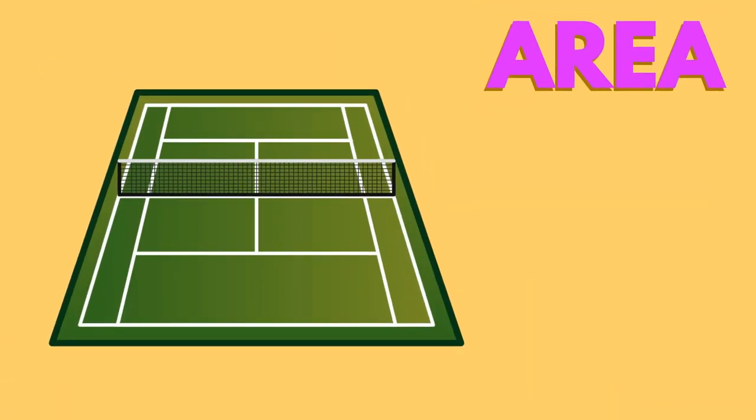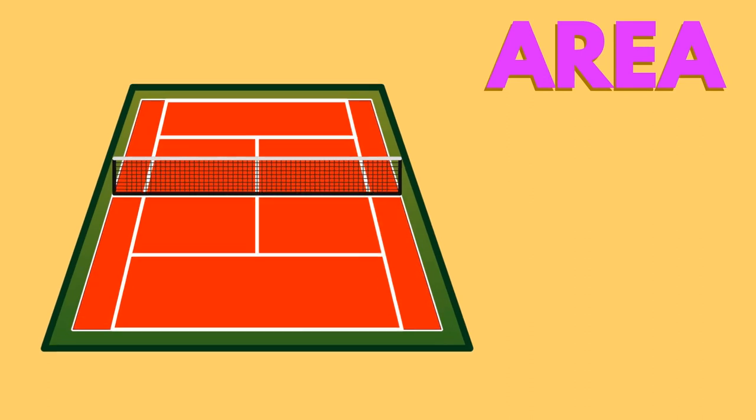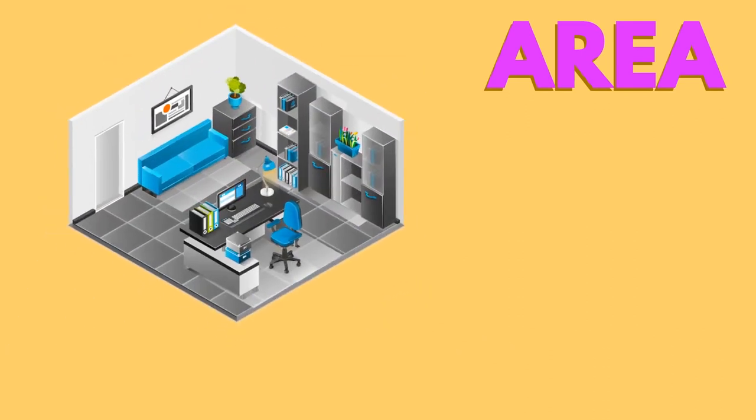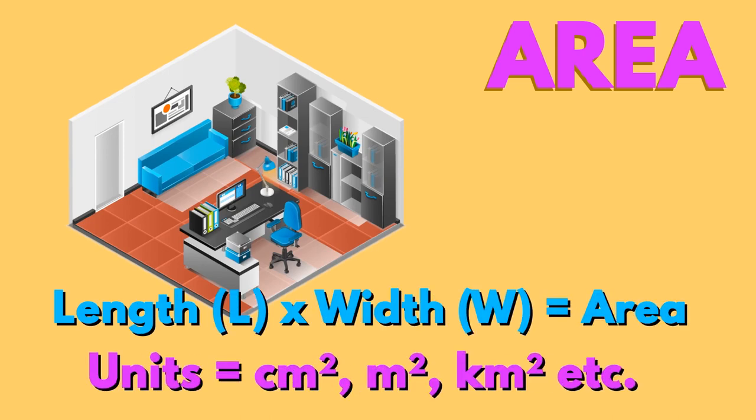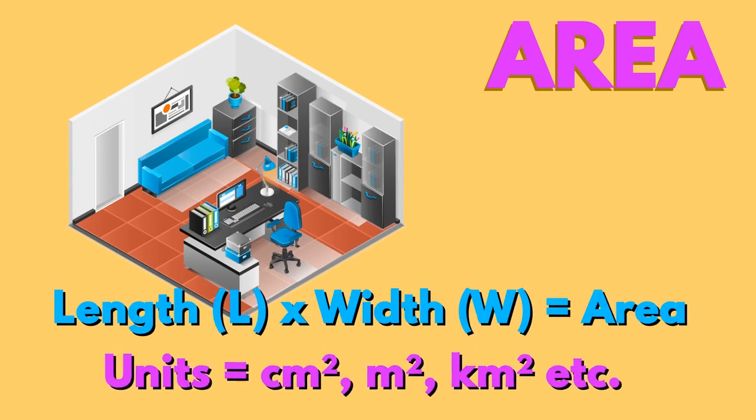Area describes the amount of space covered by the surface of a two dimensional shape. Suppose you need to tile the floor of a room. The amount of floor space you need to cover with the tiles is its area. Its formula is length times width and is measured in squared units, such as metres squared.